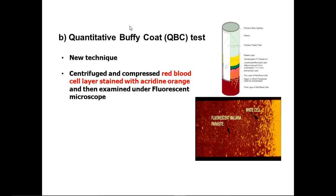Another technique is the quantitative buffy coat, a newer technique using fluorescent microscopy. The procedure takes place in a glass hematocrit tube pre-coated internally with acridine orange stain and potassium oxalate. It is filled with 55 to 65 microliters of blood, then centrifuged so that components separate according to their densities forming bands. A fluorescent microscope is required for this purpose.